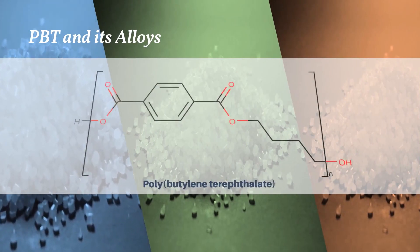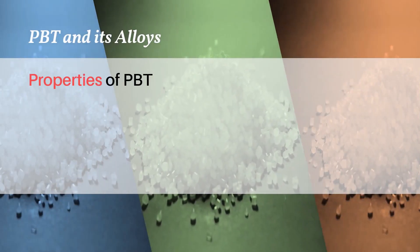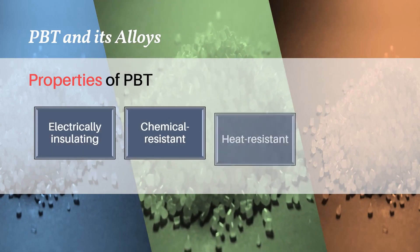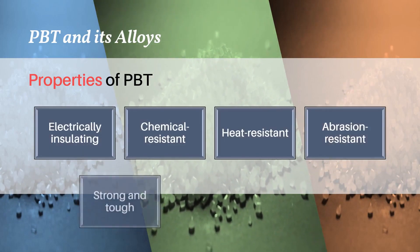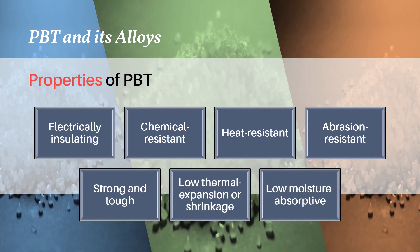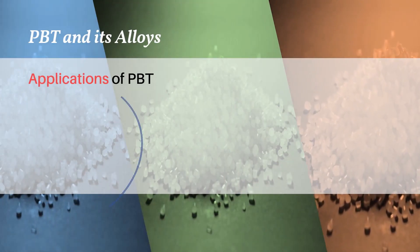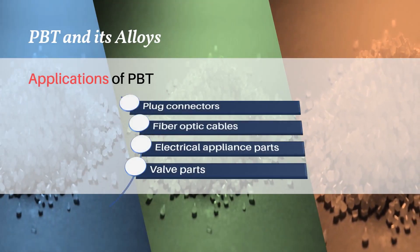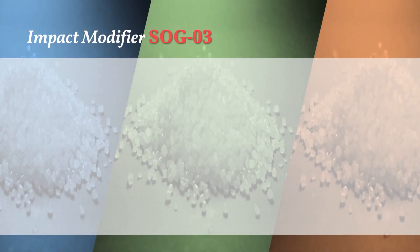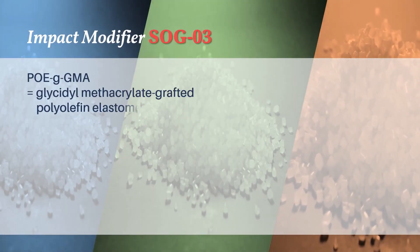Polybutylene terephthalate, also known as PBT, has many useful properties — for example, it is electrically insulating, chemical resistant, and mechanically strong. Thus PBT has been used for many electrical applications. To enhance the impact strength of PBT and its alloys, we suggest our impact modifier SOG 03.